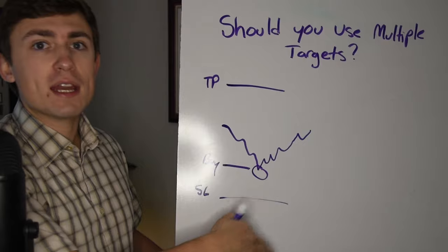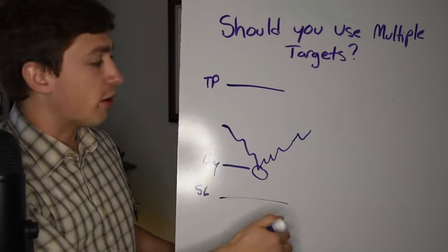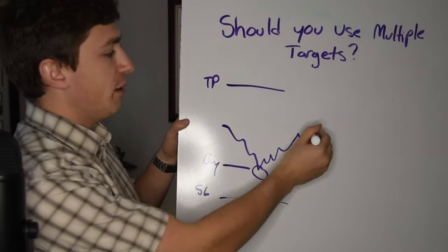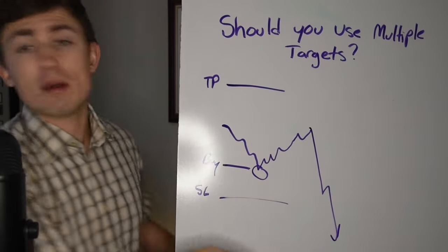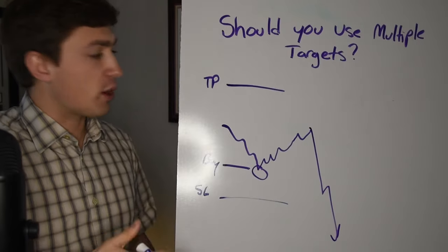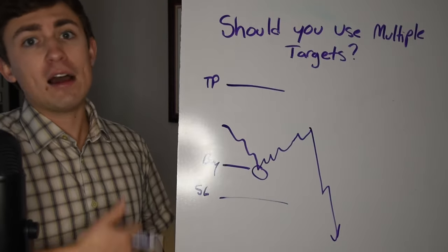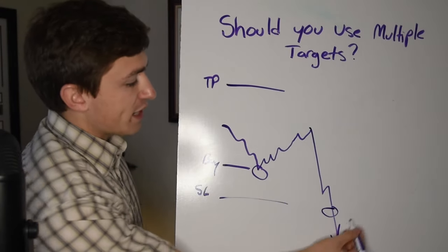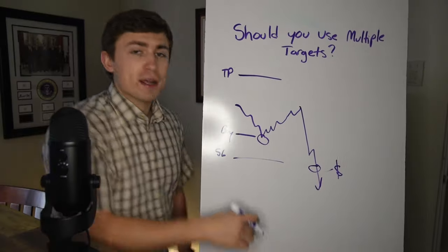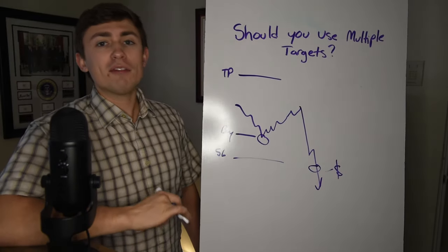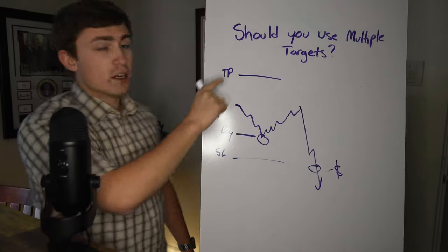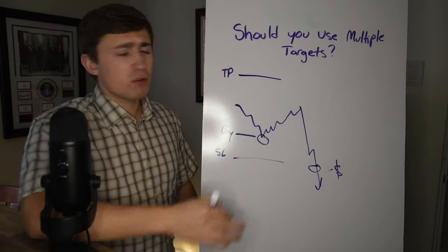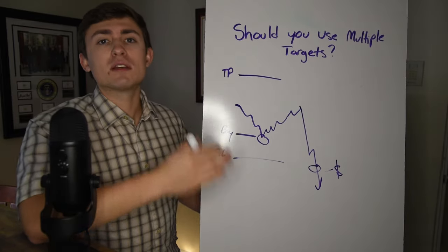They took the trade and the market started to move in their favor. But then sometimes what happens is the market reverses on them before hitting the take profit. So whatever that is, let's say you have news or you just have a shift in the market and you see the market turn back and go the other way. Now you're out of the trade and you did not take any profit. So you ultimately hit your stop loss and it's a negative trade. So the idea here is, well, what if we, instead of doing just one take profit, what if we took some of the profit along the way?